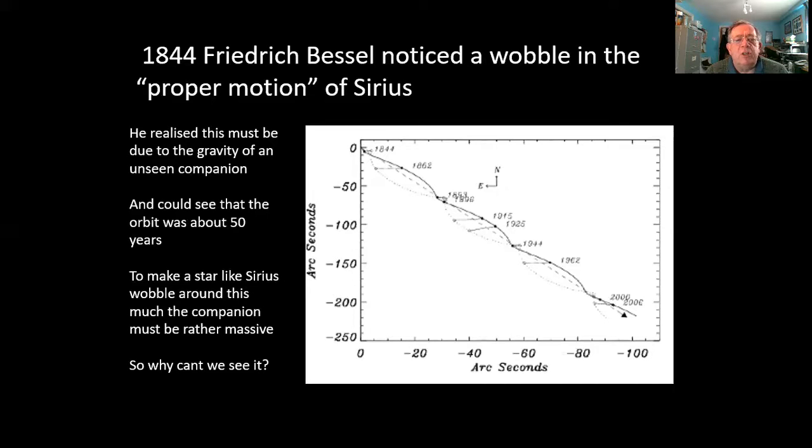To make a star like Sirius wobble as much as it was doing, this meant that the companion would need to be quite massive indeed. So he wanted to know why it was not possible to see it, why it had not been observed.